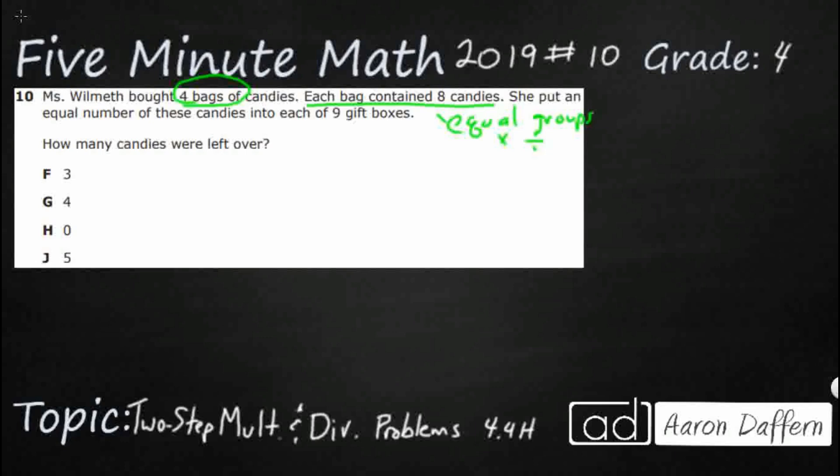And then she put an equal number of candies into each of nine gift boxes, so we've got more equal groups, which means more multiplication and division.